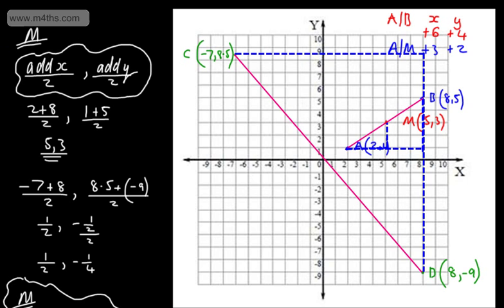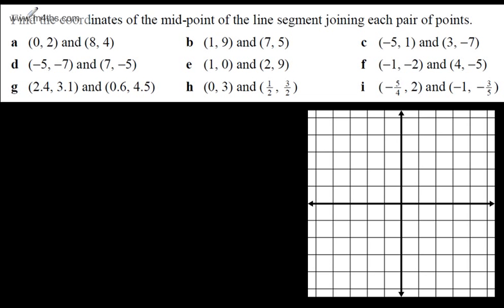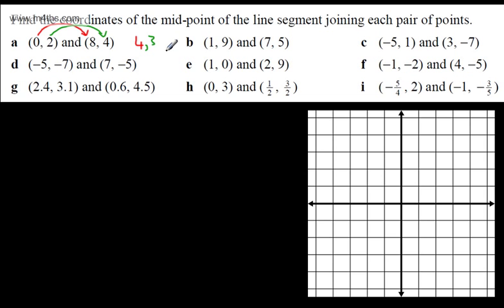Let's have a go at a few. We're asked to find the coordinates of the midpoint of the line segments joining each pair of points. For the first one: going from 0 to 8, I've added 8, so halfway I add 4, giving x = 4. Going from 2 to 4, I've added 2, so halfway I add 1, giving y = 3. The midpoint is (4, 3).